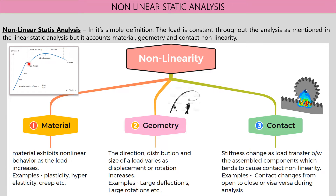From yield to ultimate, there is strain hardening and the component will exhibit plasticity. Post that, it will try to fracture and fail. In material non-linearity, we consider yield strength and ultimate strength with respect to the percentage change in elongation. Examples include plasticity and hyperelastic materials.